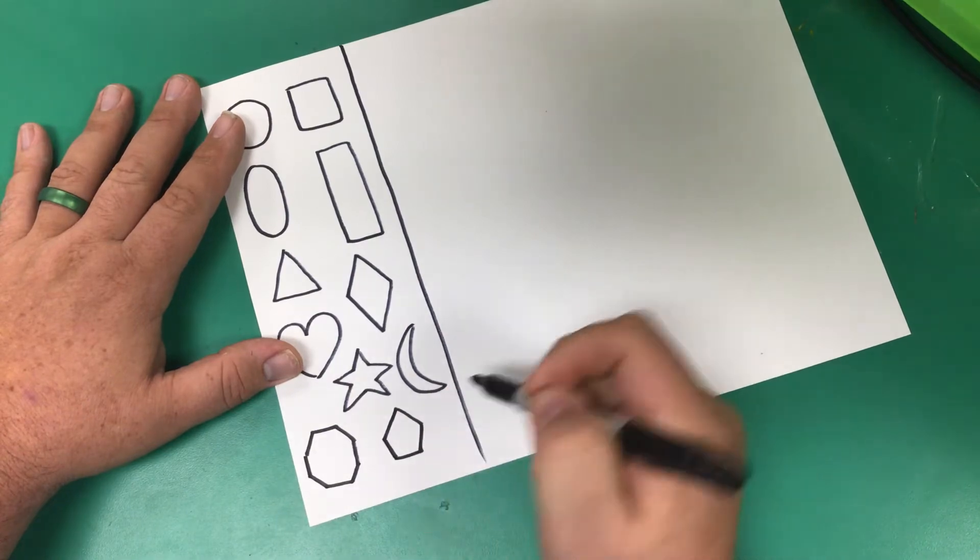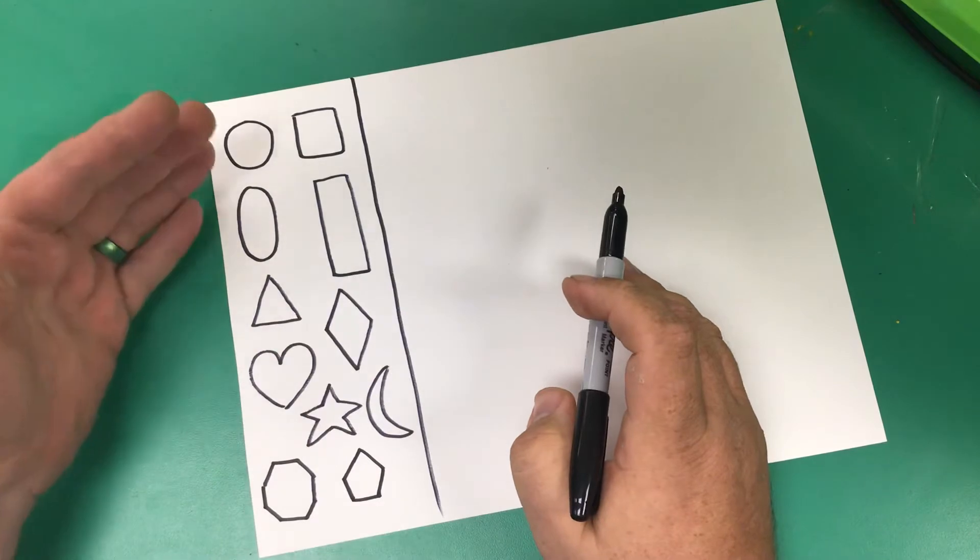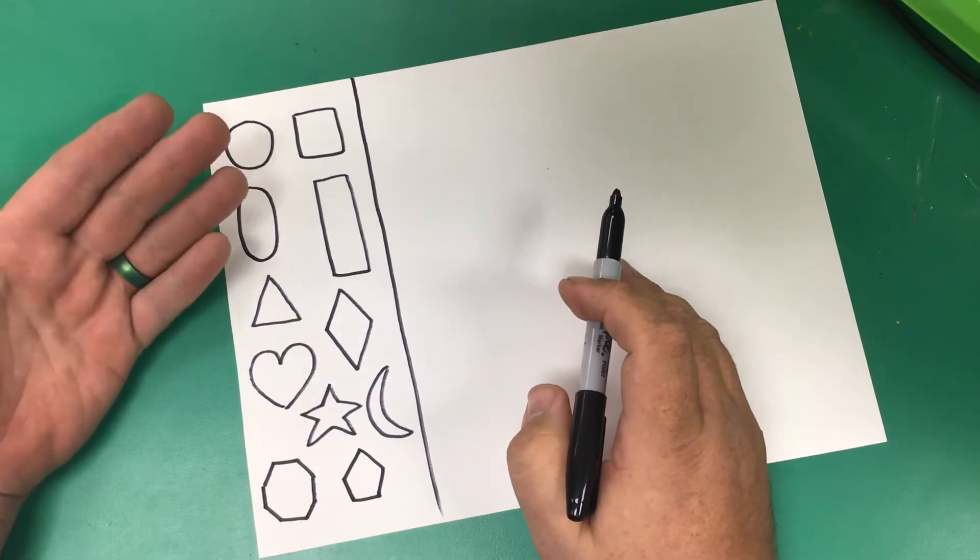You got one, two, three, four, five. This is an octagon like a stop sign. So those are our basic geometric shapes. Geometric.